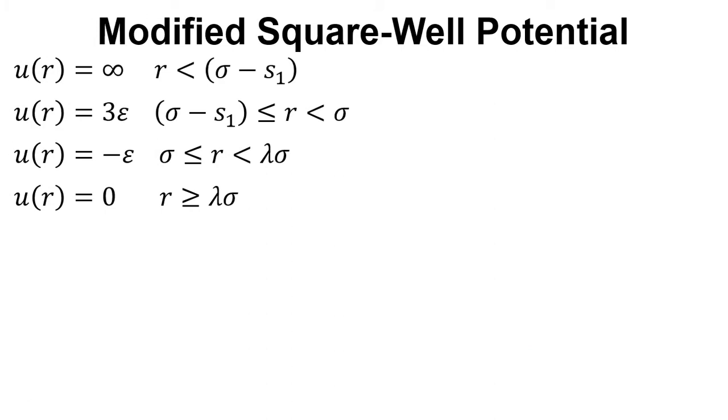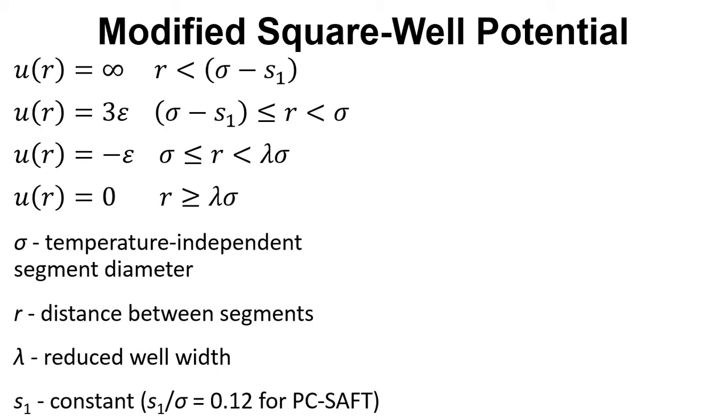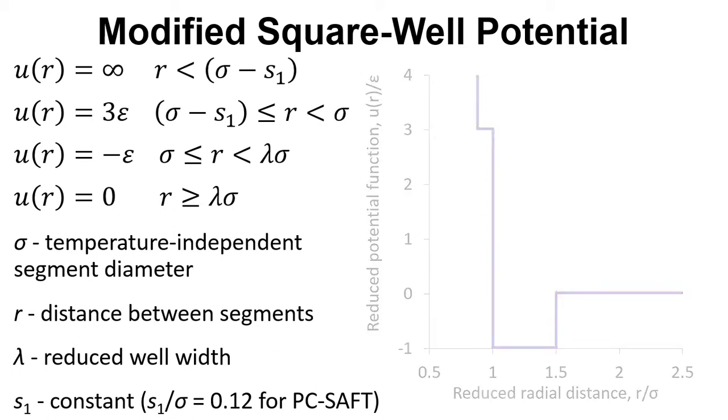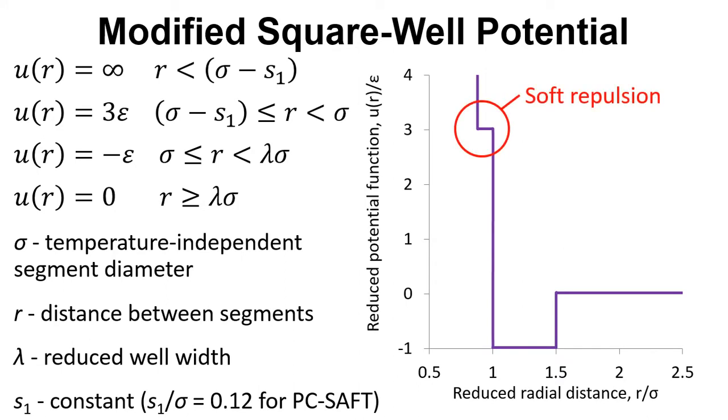Another approach has been to use the modified square well potential. Again, we've got these parameters, but in addition, we've got S1. Now, S1 divided by sigma equals 0.12 for the PC-SAFT model. And if we plot this out, we get this extra step here.